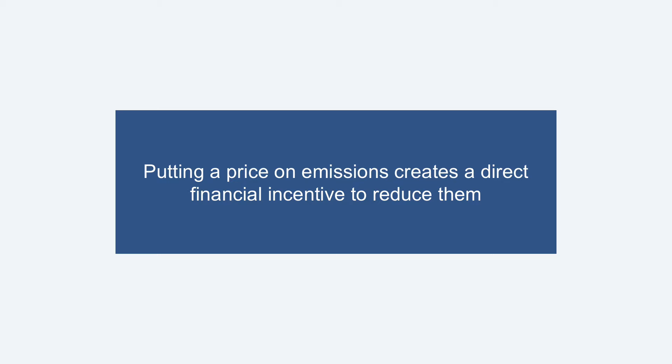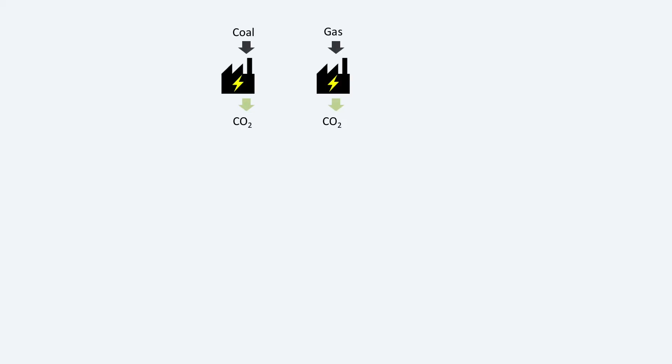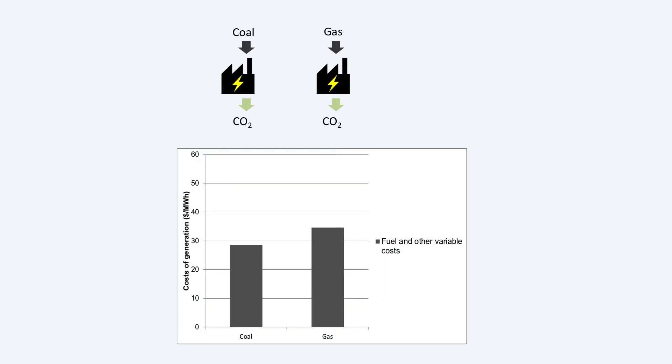So how does this work? Let's look at the example of an electricity system with both gas and coal fuel generating plants — a very common situation around the world. To meet demand for electricity we have a choice of which plant to use, so which plant generates the electricity. If we look at the cost of producing a unit of electricity, measured in dollars per megawatt hour, simply based on fuel and other operating costs, it will often be the case that it is cheaper to run coal plant than gas plant.